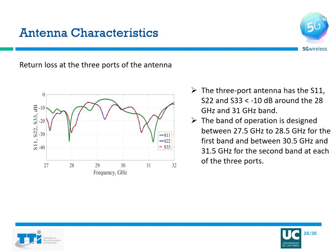Using the antenna design principle and design steps outlined, a 3D simulation model was set up in a full wave 3D solver. The antenna characteristics are presented focusing on return loss. The 3-port antenna has S11, S22, and S33 — the return losses at port 1, port 2, and port 3 — all being less than minus 10 dB around the 28 GHz and 31 GHz bands. The band of operation is between 27.5 GHz and 28.5 GHz, and also between 30.5 GHz and 31.5 GHz.